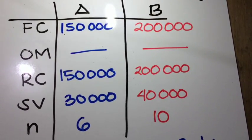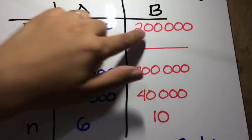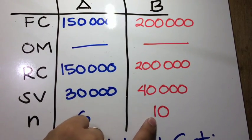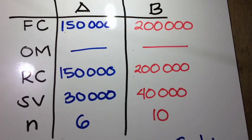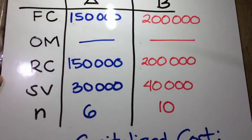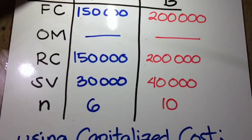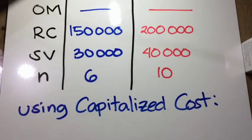At first glance, we don't know which one is better. If we compare the first cost, machine A is better than B. But if you look at the lifespan, machine B lives longer than A. So we need to quantify which one is better. We can use our capitalized cost or our annual cost. First, let's try to use capitalized cost.